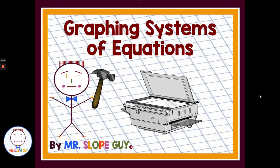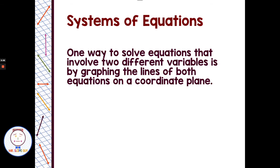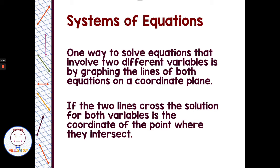Graphing systems of equations. One way to solve equations that involve two different variables is by graphing the lines of both equations on a coordinate plane. If the two lines cross, the solution for both variables is the coordinate of the point where they intersect. So solving systems of equations, the first method we're looking at is solving by graphing, and when we solve systems of equations, they involve having two variables and starting with two equations.